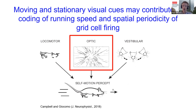One alternate way to estimate running speed is the use of vision — in particular, static visual cues or optic flow. Previous studies have shown that visual inputs are important for grid cell firing, and a key question is how visual inputs are integrated in the coding of self-location. We therefore examined the role of visual inputs for the coding of running speed and grid cell firing in the medial entorhinal cortex.